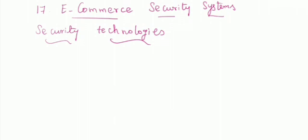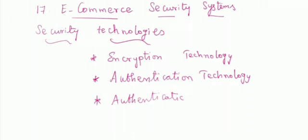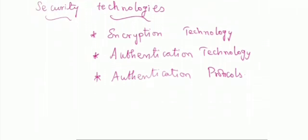The first type is encryption technology. The second one is authentication technology. And the third one is authentication protocols. These are the three classifications. In this class we are going to discuss about encryption technology — the first one alone.